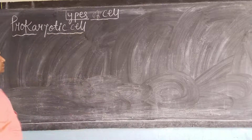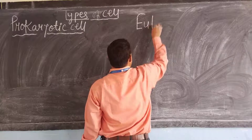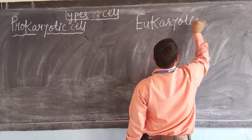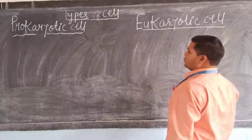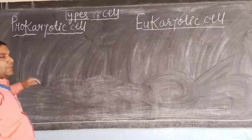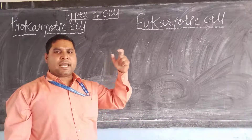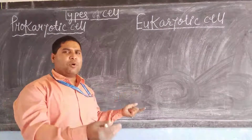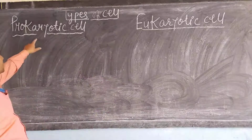Prokaryotic cell. The type of cell which are immature, do not contain nucleus or cell organelles. It has a single length of DNA and small ribosomes. These can be termed as prokaryotic cells.